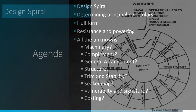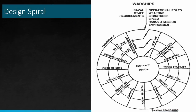Let's start with the design spiral, a key idea in naval architecture. We start off with a set of requirements — your mission profile: what is the vessel supposed to do, what weapons is she supposed to carry, how fast does she go, how far does she go, what environments is she operating in. Once you have your initial requirements, you figure out weapon configurations and other things.